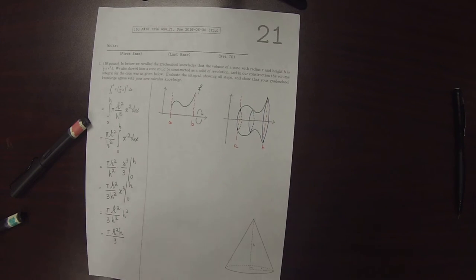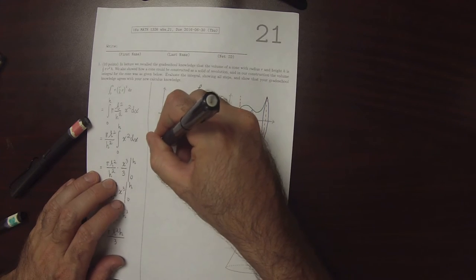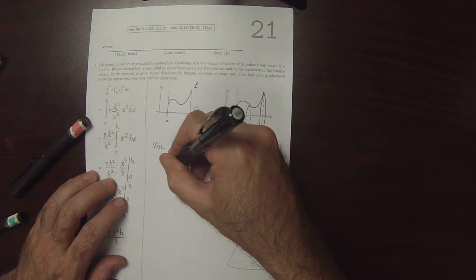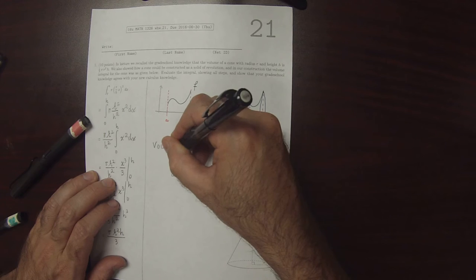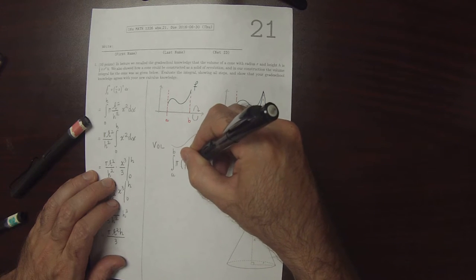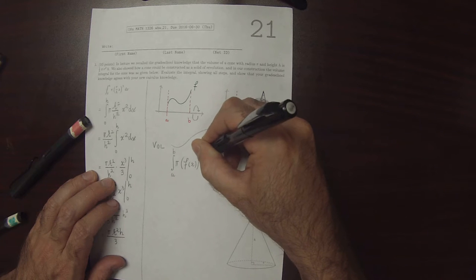The formula for the volume of that solid is the integral from a to b of pi f of x squared dx.